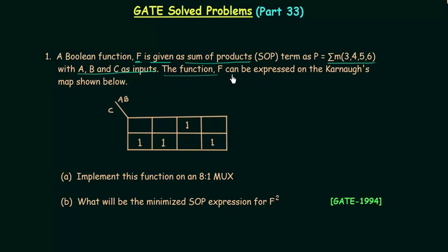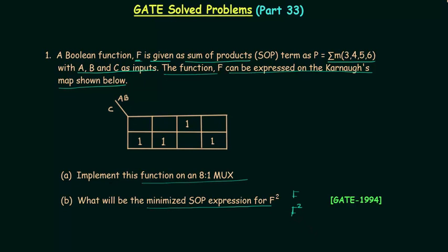The function F can be expressed on the Karnaugh map shown below. I will use this K-map to solve parts (a) and (b) of the problem. In part (a), we need to implement the function using 8:1 MUX. In part (b), we have to find the minimized SOP expression for F². First we will find F, then F².